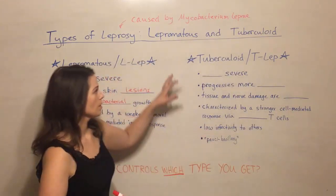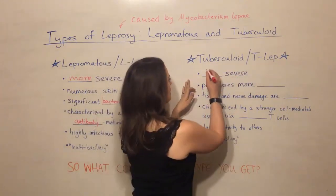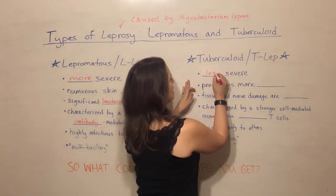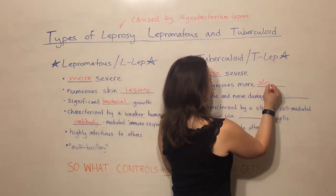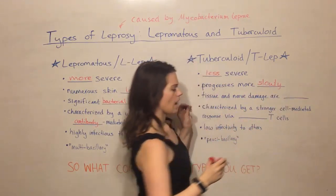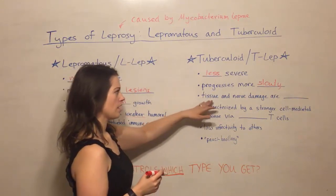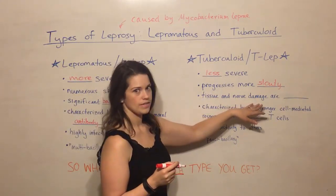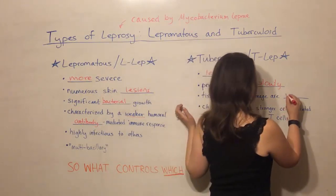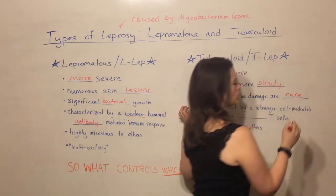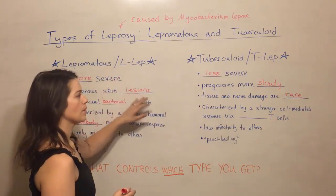Now let's talk about tuberculoid leprosy, also known as T-LEP. This is the less severe kind — it progresses more slowly. There are fewer lesions, less bacterial growth, and overall less tissue and nerve damage. T-LEP is much less severe than L-LEP.